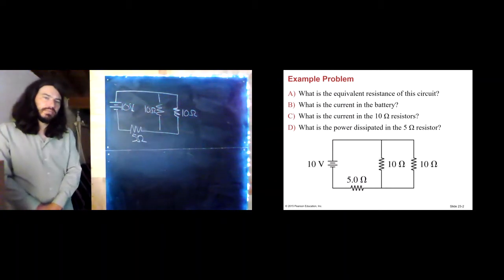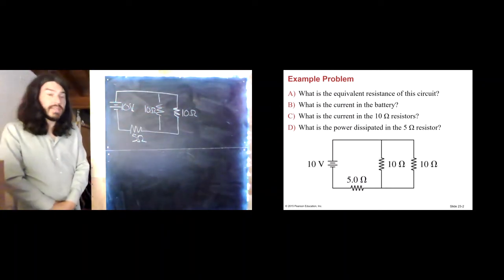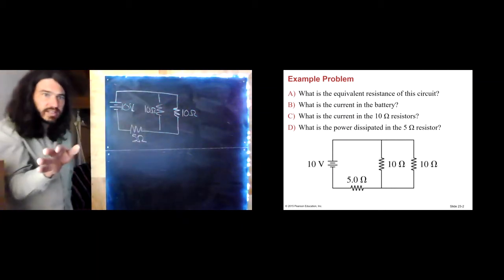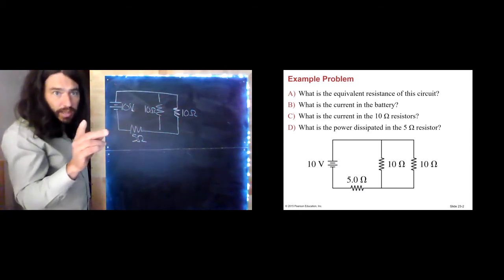Are they series or parallel? Hopefully, you decided that they were in parallel because they have the same potential across them. There is a junction in between them, so they're definitely not in series, but they do have the same potential. Therefore, they are in parallel.